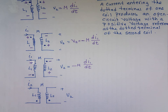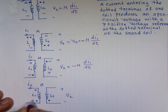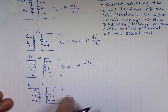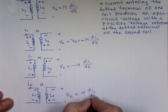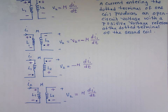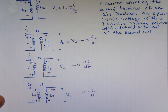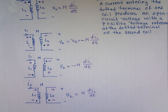In the last example, this end is plus and this is minus, which means the dot has to be minus here. The sign of V2 matches, so that's positive M di1/dt. The key point: if V2 is labeled plus-to-minus and the dot is on the minus end, it's negative; if V2 is labeled plus-to-minus and the dot is on the plus end, it's positive. That's how the dot convention works.